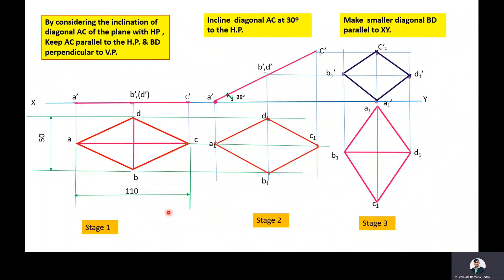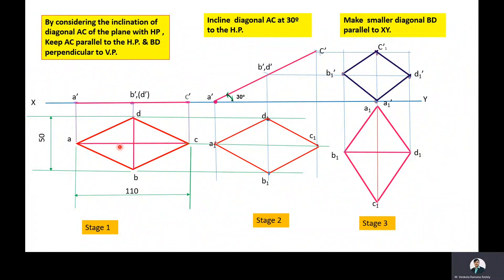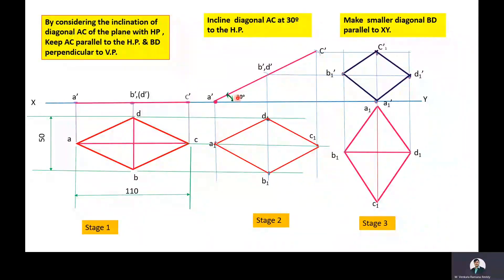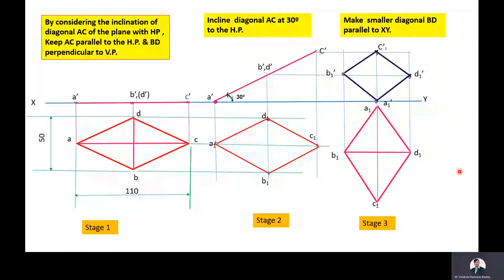The plane inclined to both planes problems can be solved in three stages. Stage 1: initial position assumption. Stage 2: surface inclination with the reference plane. Stage 3: side or diagonal inclination with the reference plane. In this problem, the longer diagonal is parallel to HP, meaning the total plane is parallel to HP and perpendicular to VP (Stage 1). In Stage 2, the longer diagonal makes 30 degrees to HP. In Stage 3, the smaller diagonal is kept parallel to both HP and VP, giving the final shape.